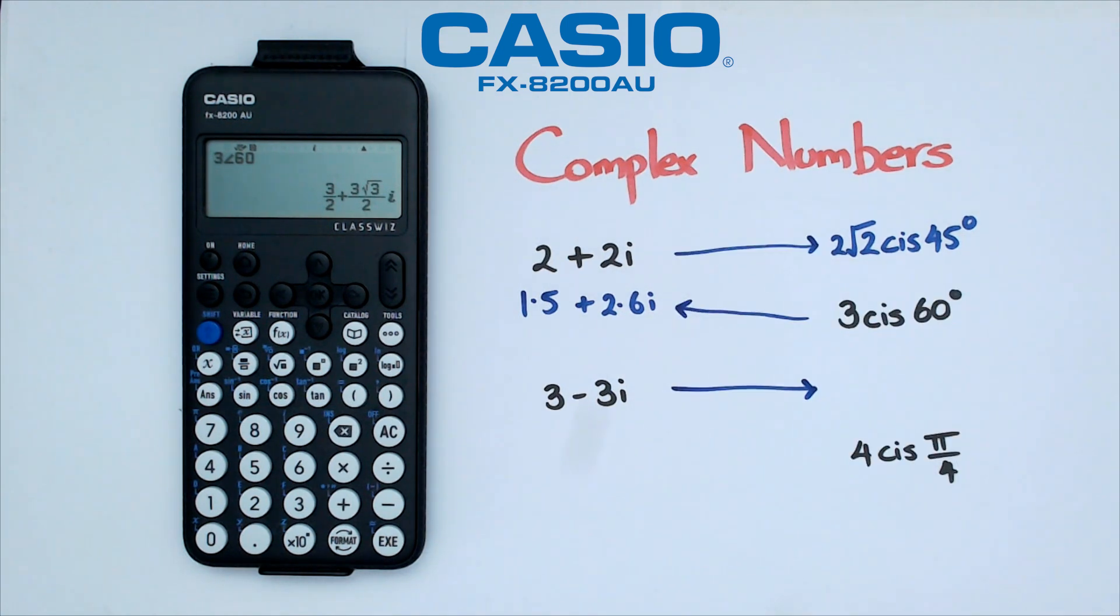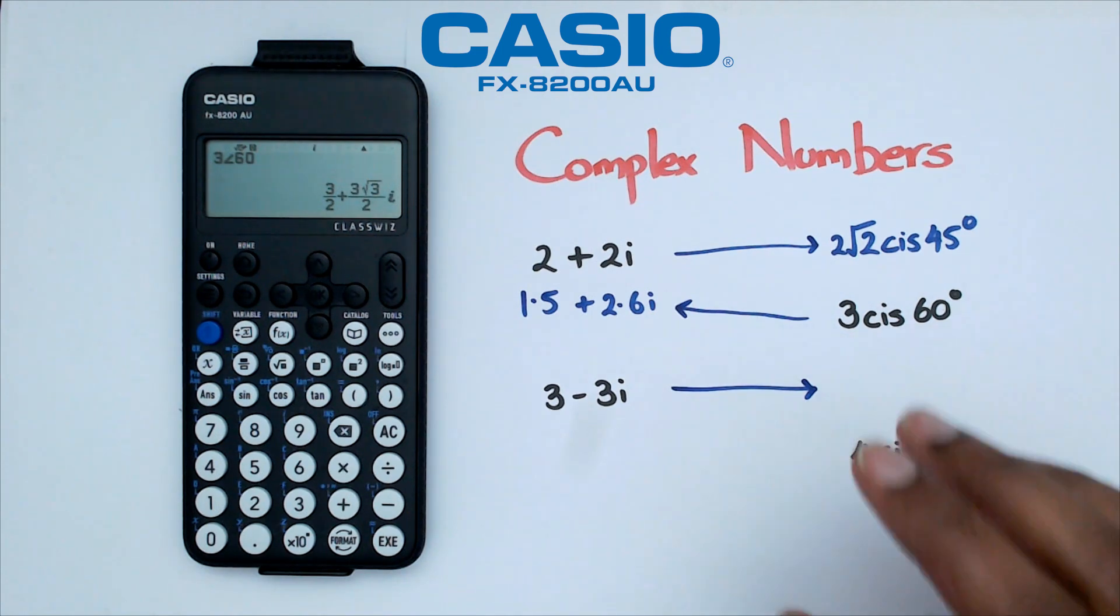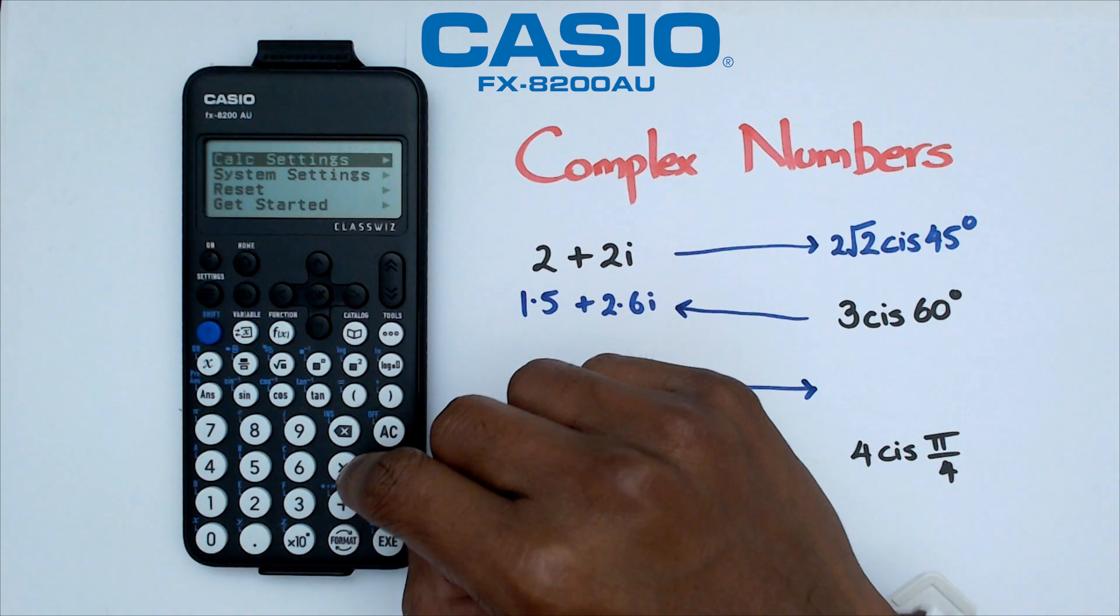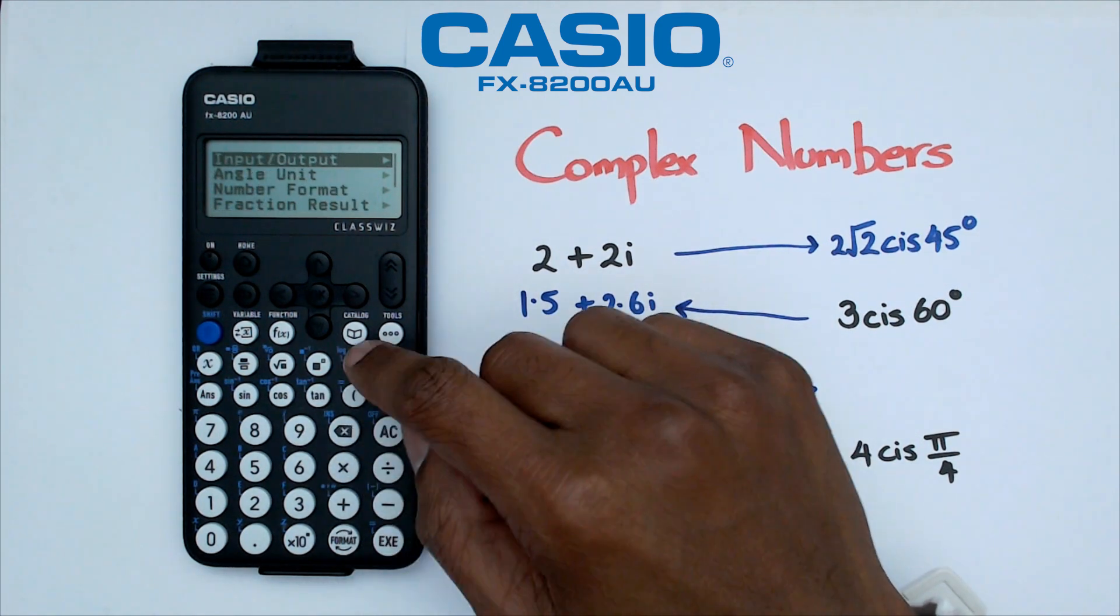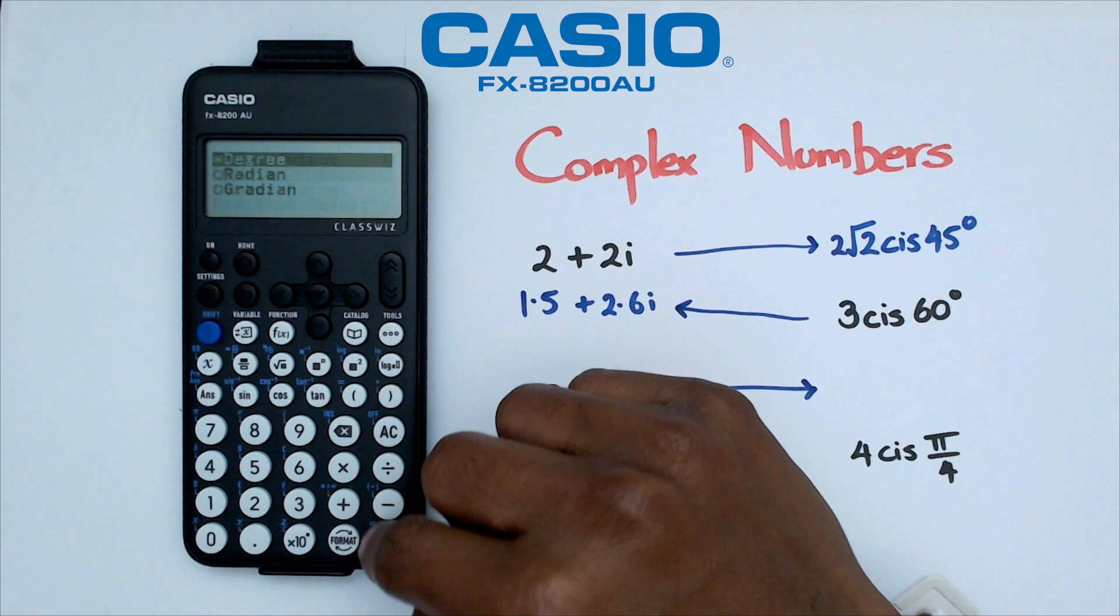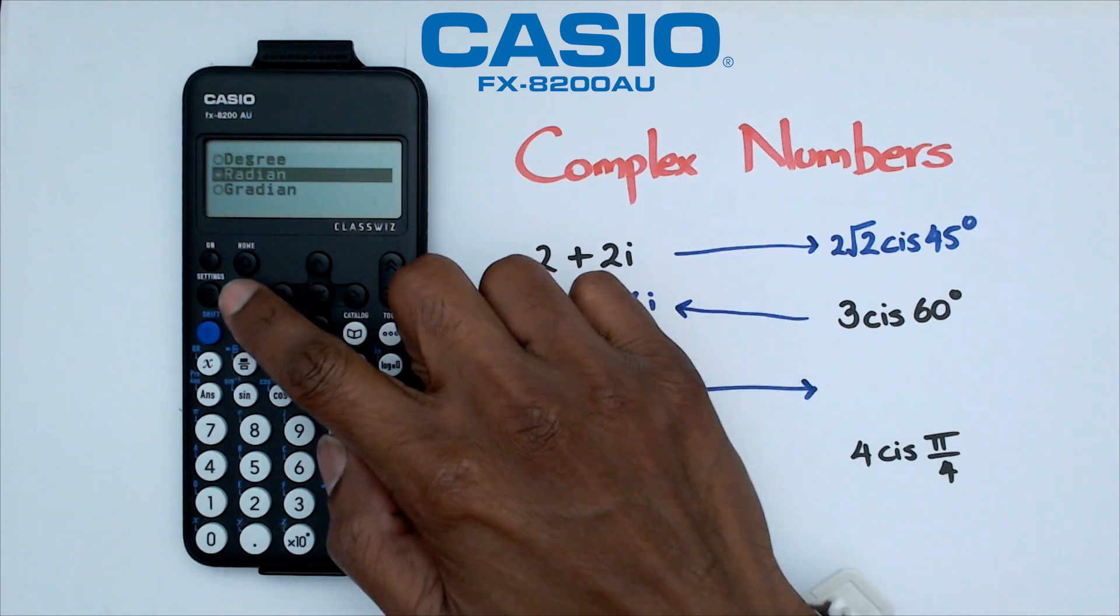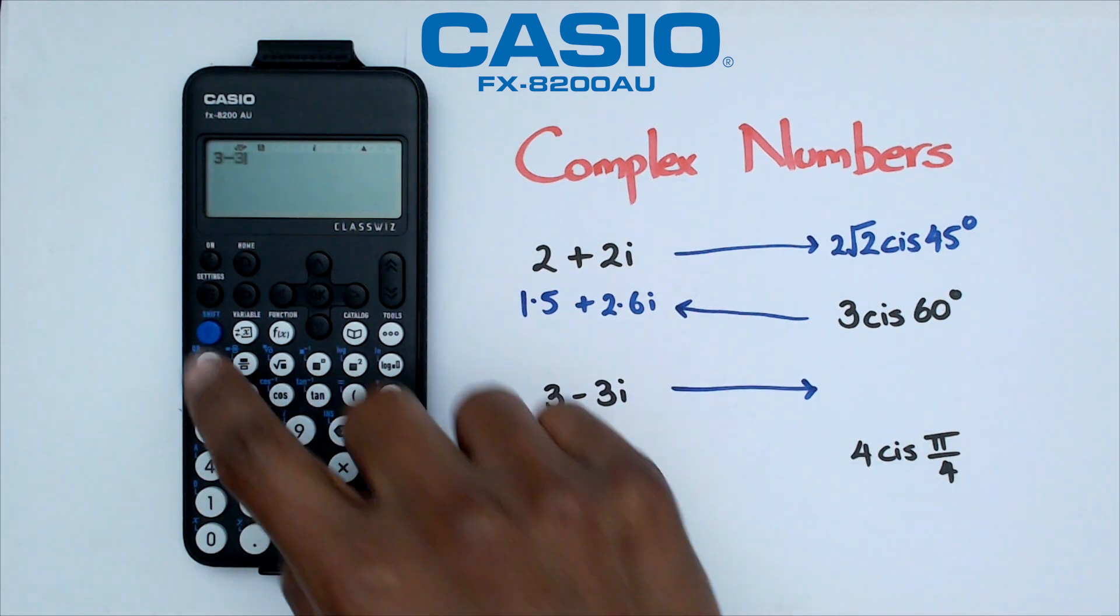All right, next up, we've got 3 minus 3i. And we want to actually do this in radians this time. So what we need to do is make sure that our calculator is in radians. So we're going to click on settings, calc settings, we're going to go to angle unit, and we're going to change that to radians. We're going to come back. And so we've got 3 minus 3i.